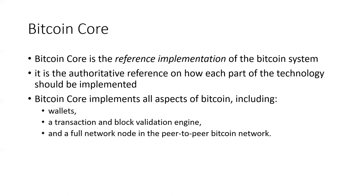Bitcoin Core is the reference implementation of the Bitcoin system, meaning it's the authoritative reference on how each part of the technology should be implemented. Bitcoin Core implements all aspects of Bitcoin, including wallets, a transaction and blockchain validation engine, as well as a full network node in the peer-to-peer Bitcoin network. However, it is not recommended that you use the Bitcoin Core wallet as a production wallet. Instead, you're advised to use a wallet that uses modern standards such as BIP39 and BIP32 — mnemonic code words and HD wallets.